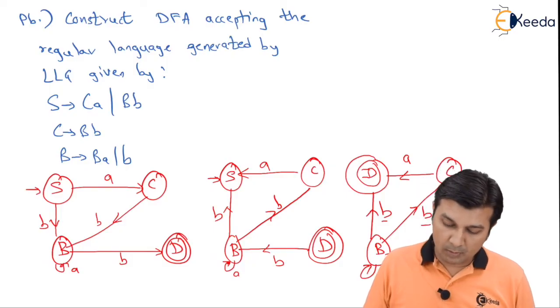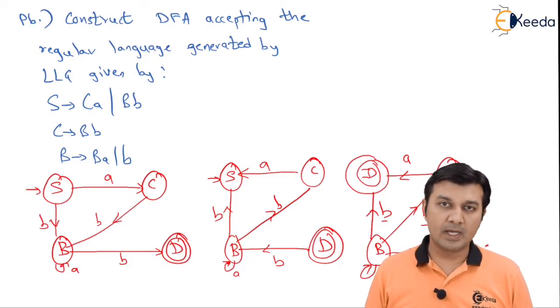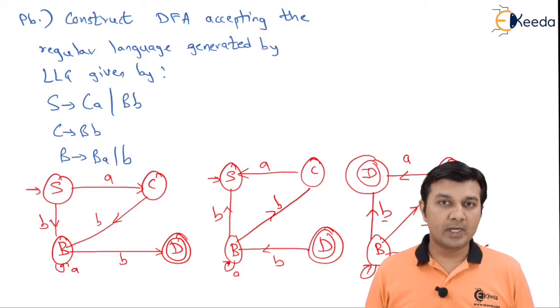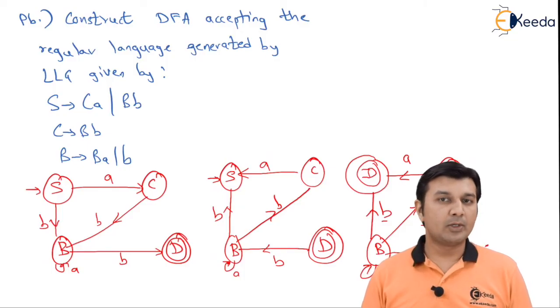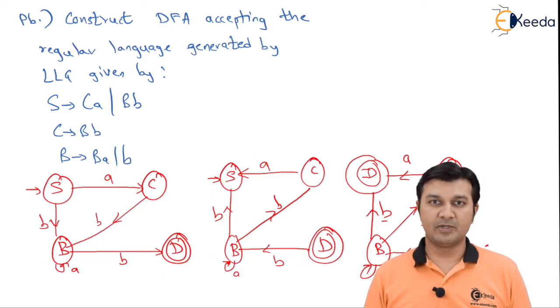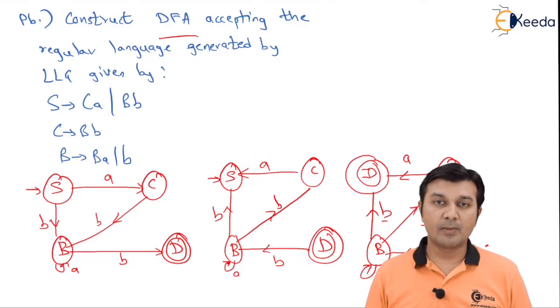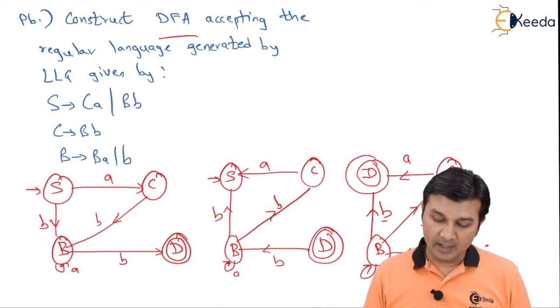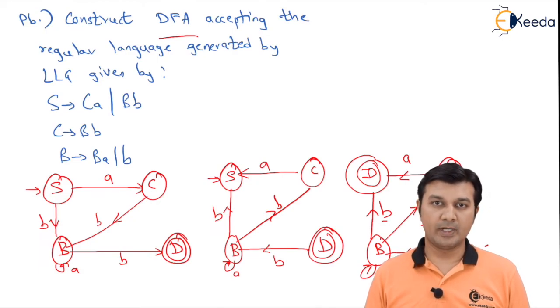So we stop this problem over here and conclude that you will be able to get this NFA converted to DFA on your own. We are restricting strictly to the topic of linear grammar and therefore we are not solving this problem further. With this we complete the conversion from left linear grammar to deterministic finite automata. Thank you. See you in the next session.